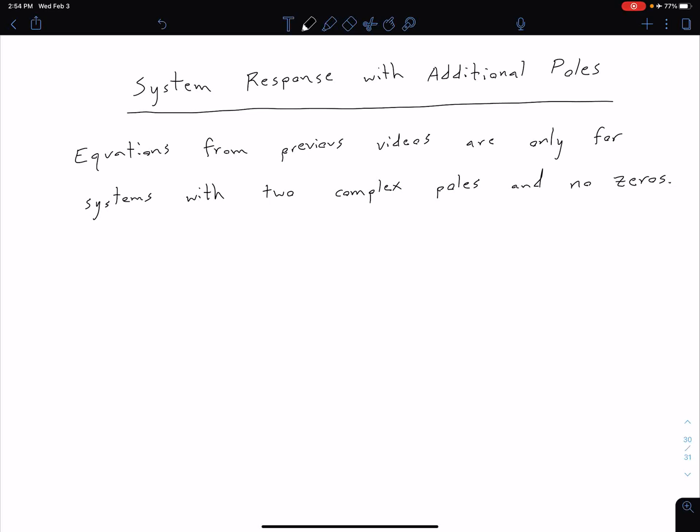In the last few videos we've been looking at the underdamped response of second-order systems. What we want to consider here is how does that response change as we add additional poles. It's worth noting that the equations from the previous few videos are only for systems with two complex poles and no zeros.